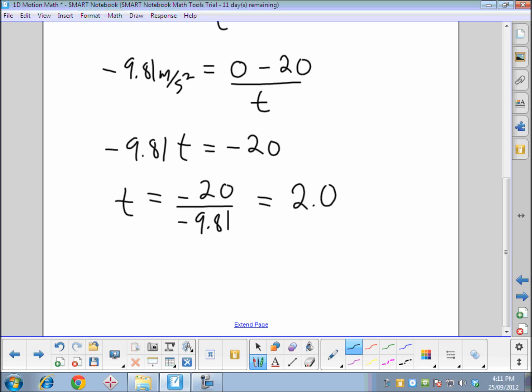Makes sense. 20 meters per second, each second gravity takes away about 10 meters per second. So about 2 seconds to go all the way up before it starts to come back down again.